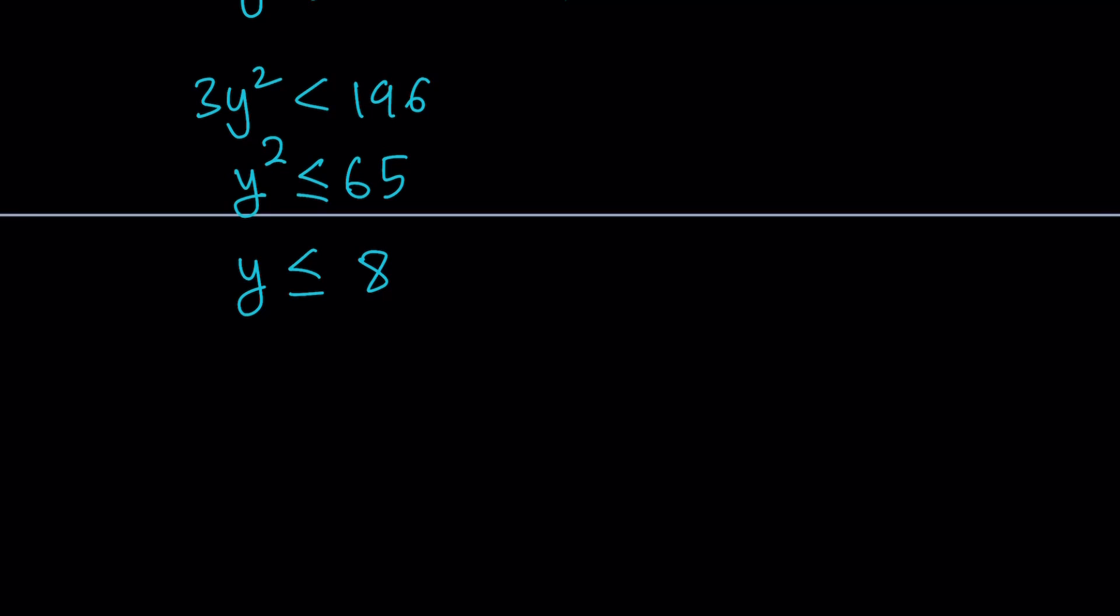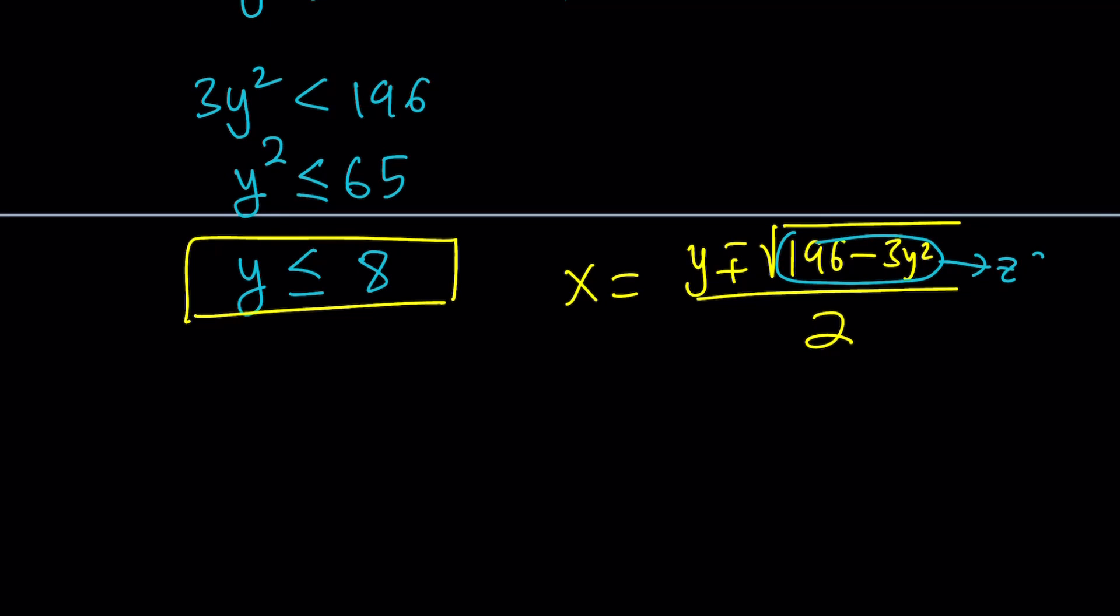Now if y squared is less than or equal to 65, think about perfect squares that are less than or equal to 65. The highest one is 8, so we can safely say that y is less than or equal to 8 since we're only focusing on positive integer solutions. Okay great, so that kind of gives us an upper bound which is nice. And then we also know that x equals y plus minus the square root of 196 minus 3y squared. This was the discriminant, I just simplified it. And now since this is z squared, the expression is going to be x equals y plus minus z over 2. So that's how we can find x once we find y and z. Let's get to work.